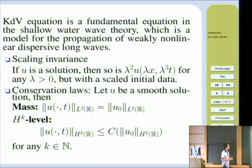The KdV equation has many symmetries, but we only mention two. First one is the scaling invariance, which is very simple. If u is a solution, then you scale by a constant. Then after scaling, that one is also a solution, but with different initial data.